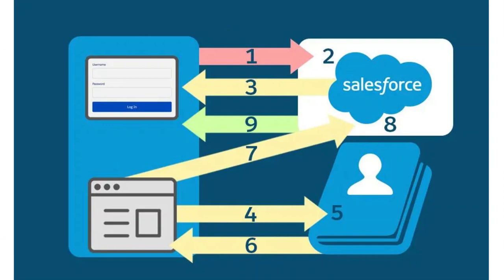This is the SAML SSO flow — all of this happens at lightning speed. Step one: the user tries to access Salesforce. Step two: Salesforce recognizes the SSO request and generates a SAML request. Step three: Salesforce redirects the SAML request back to the browser. You enter your user ID and password, it goes to the org, and Salesforce creates a SAML assertion.